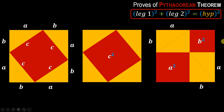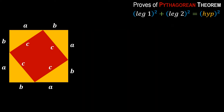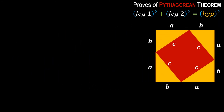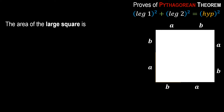For the third and last proof, I am using the same figure of four triangles of the same size, keeping it on the right side of the screen. I will go step by step. The first step is to find the area of the large square. From the top side, we can see the side is made by adding a and b, so the side length is a plus b, and therefore the area of the large square is (a + b) multiplied by (a + b).